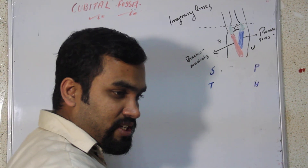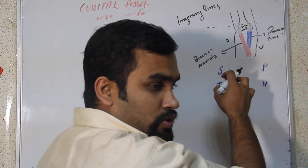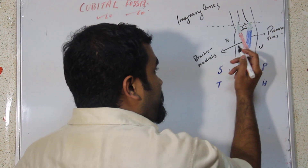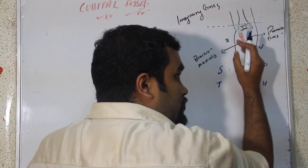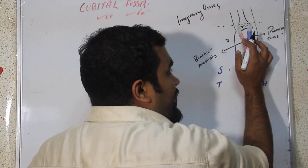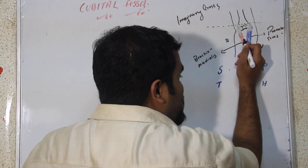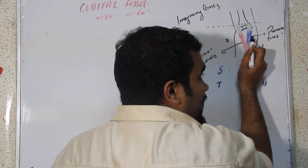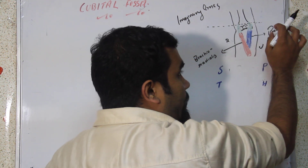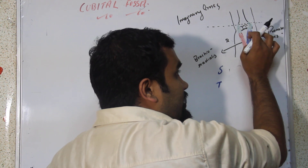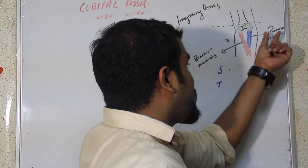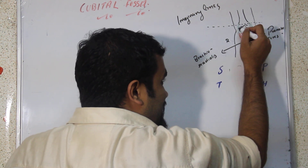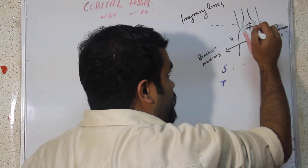On the ulnar side we have the pronator teres — we studied this in the superficial compartment. The brachioradialis we studied in the extensor compartment. Each of these muscles has a medial and lateral side. The side closer to the cubital fossa is medial. The medial part of brachioradialis participates, and the lateral part of pronator teres also participates. The imaginary line connecting the two epicondyles — lateral and medial epicondyles of the humerus — together these structures form a space called the cubital fossa.